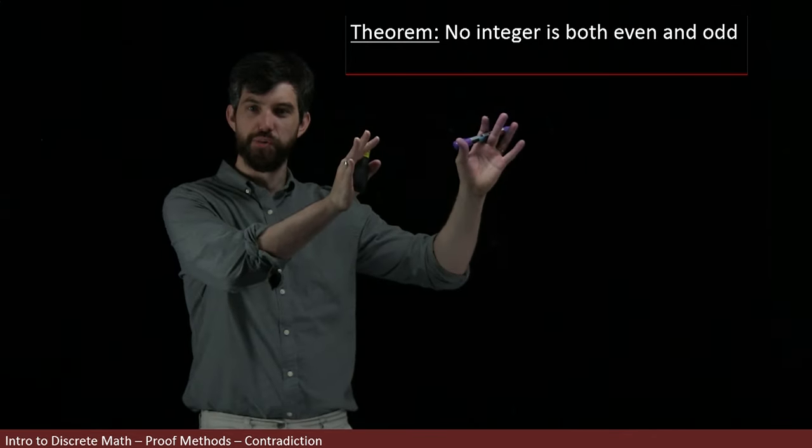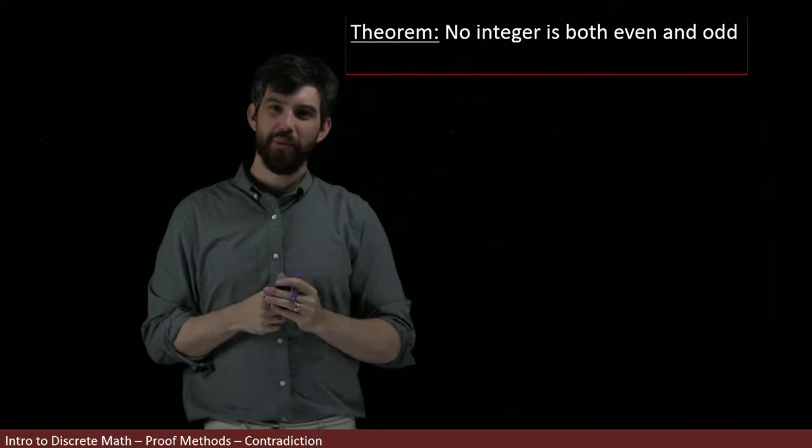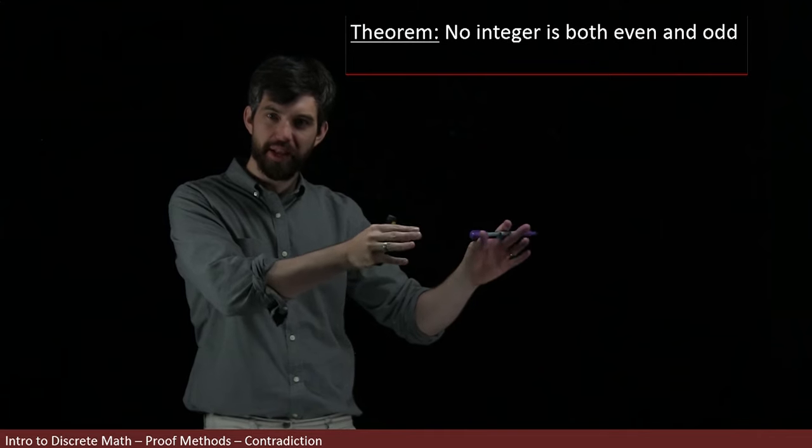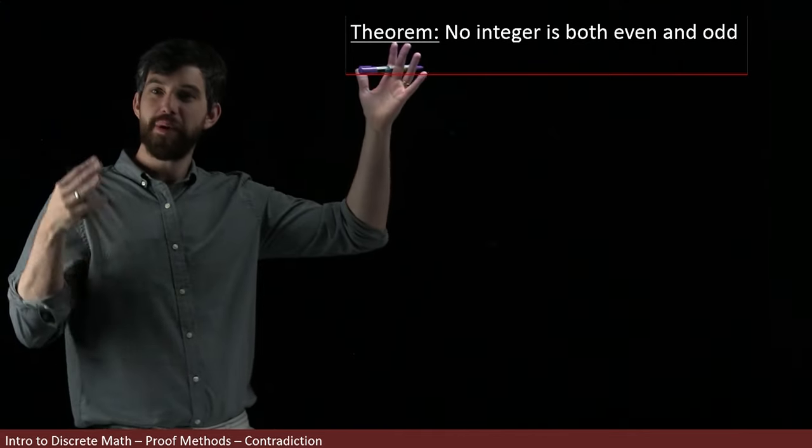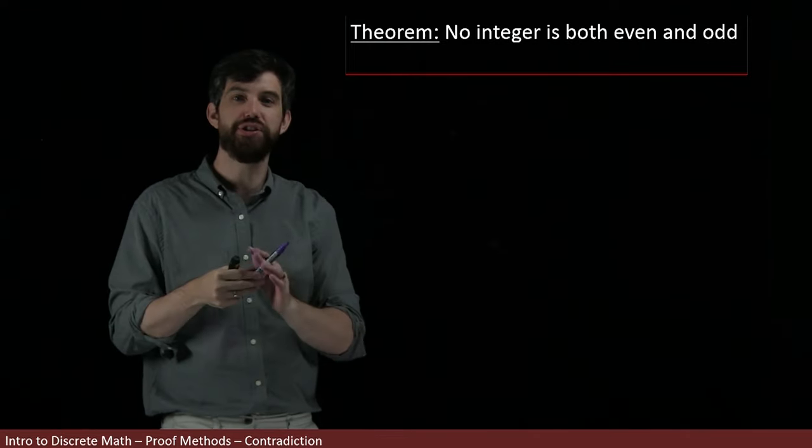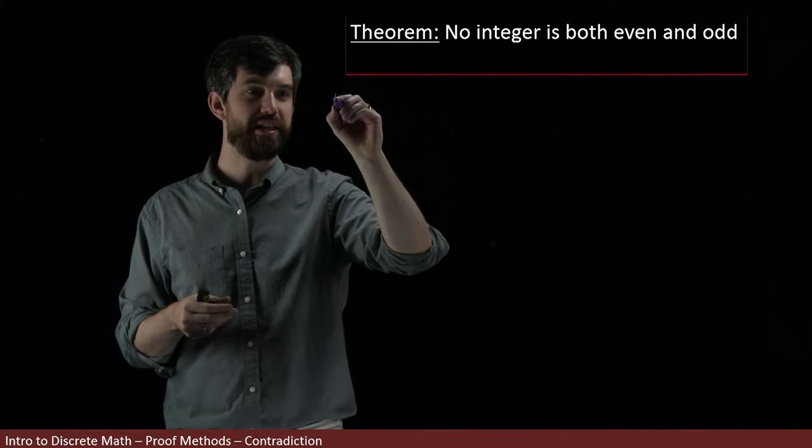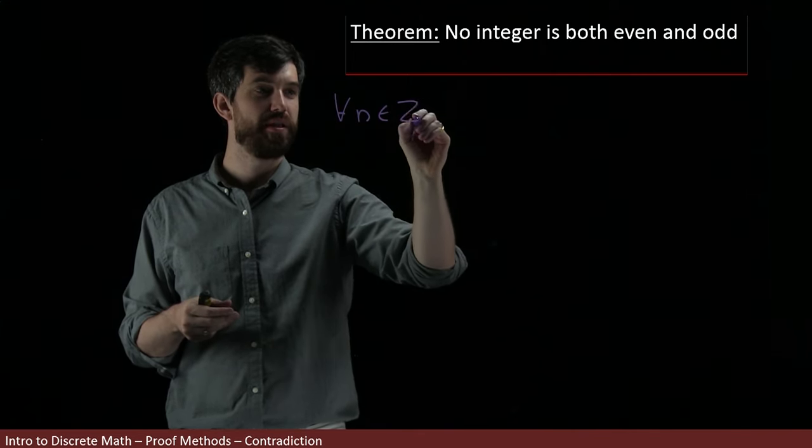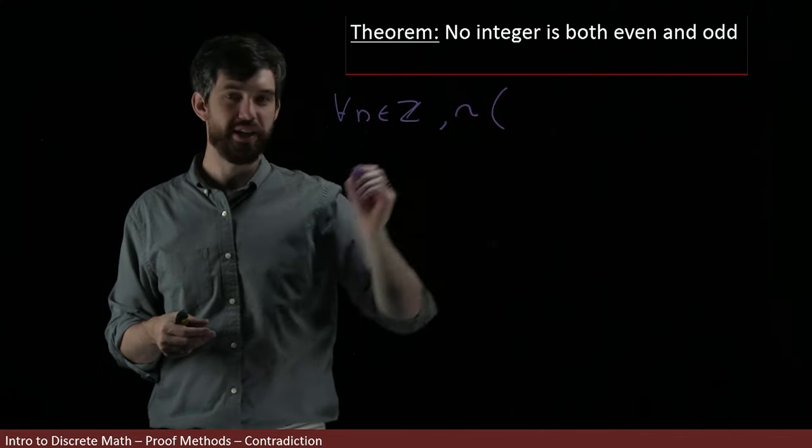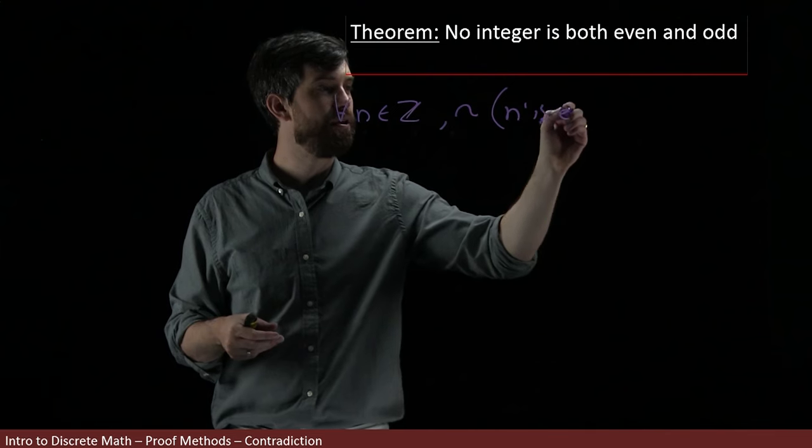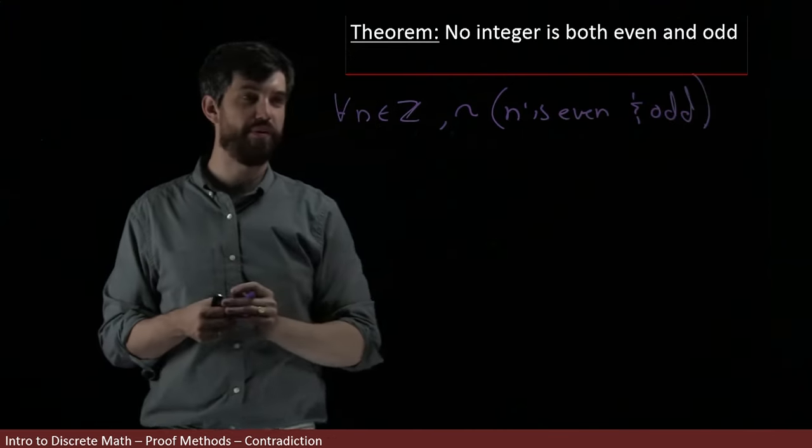Now, before I go into proving this, I want to analyze the statement for its logical form. When it says no integer has some property, this is actually an implicit universal statement. This is a claim about every single integer. Every single integer is not both even and odd. So I can rewrite this like this. I can say for every integer, in other words, for all n inside of the integers, it is not the case that n is even and odd. I never have both of these different properties.